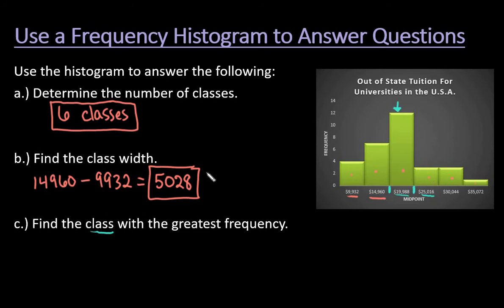To do that, we're going to use the class width. The first thing we want to do is find half of our class width. Half of 5,028 ends up giving us 2,514.